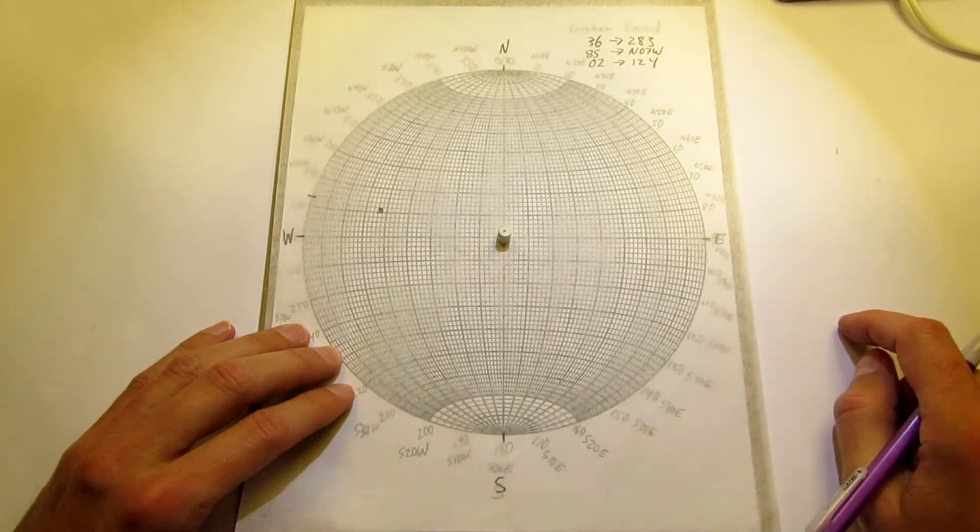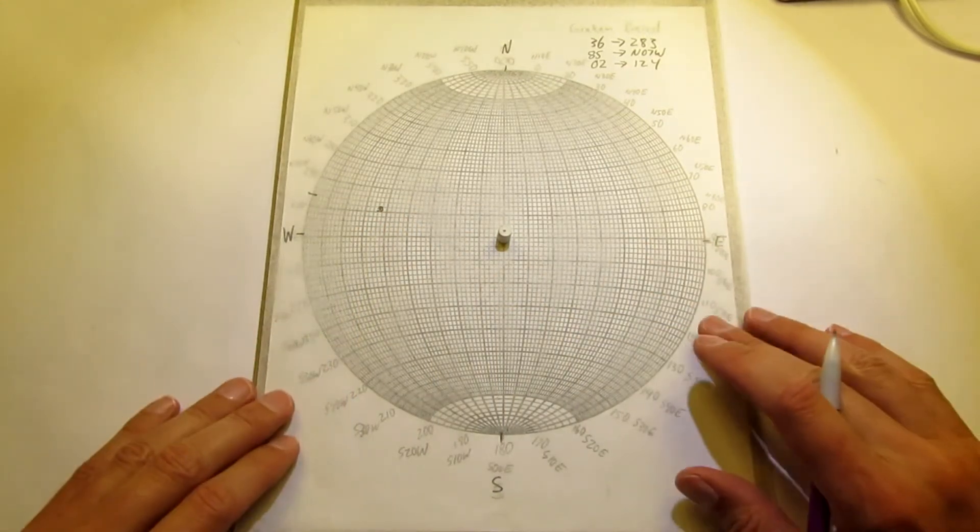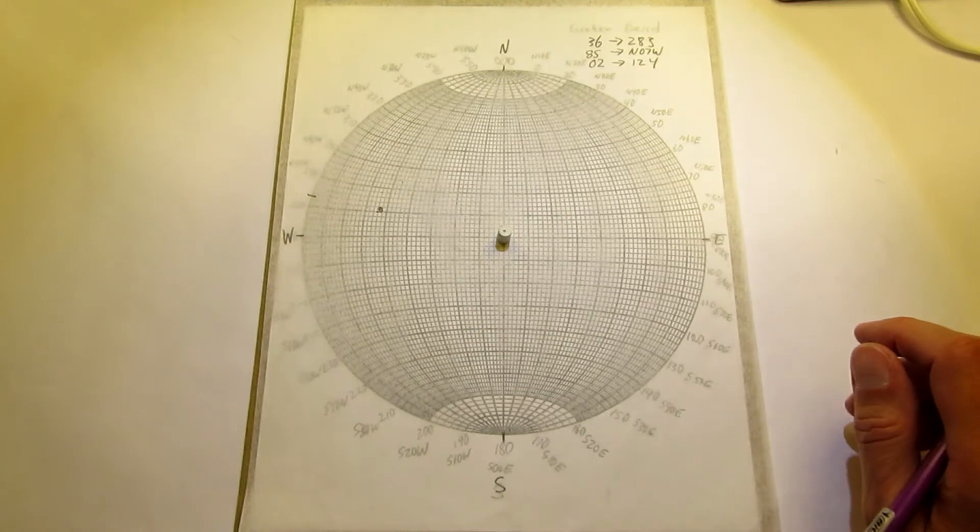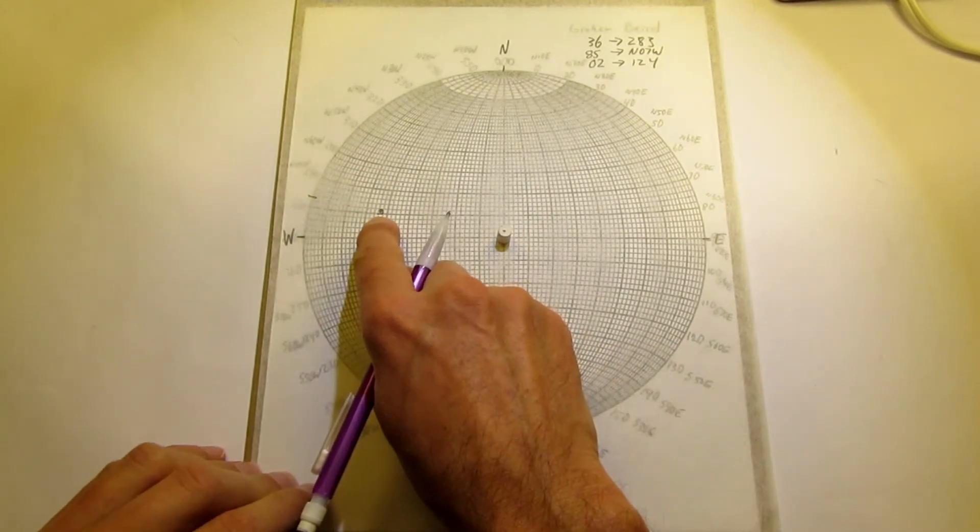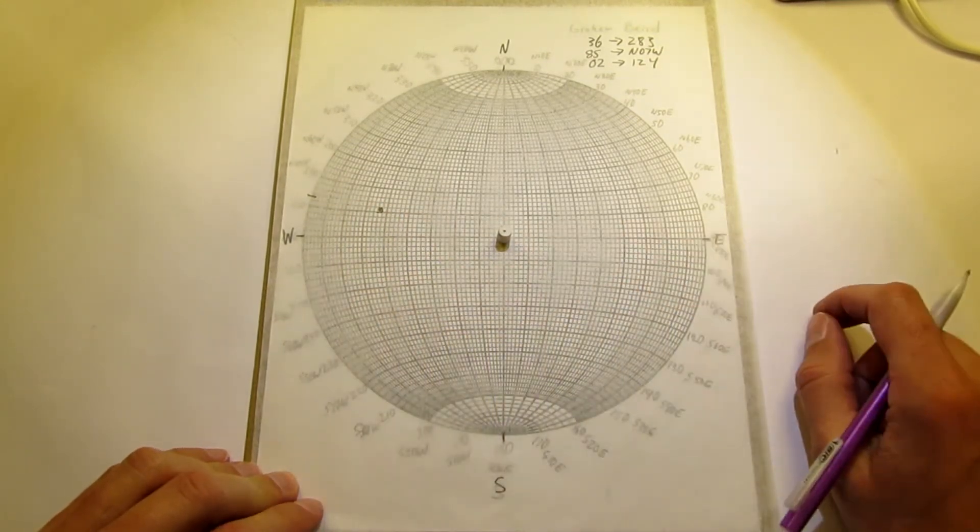And then once we've rotated the tracing paper with north back up to north, there's our line plotted successfully on the stereo net.